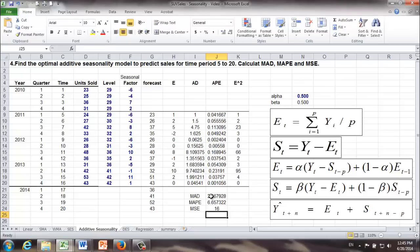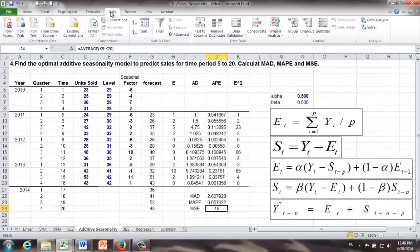But wait a second. Those results are based on the assumption that alpha is 0.5, beta is also 0.5. And we would like to optimize it. What do we mean? We want to choose alpha value and beta value wisely to minimize MSE.